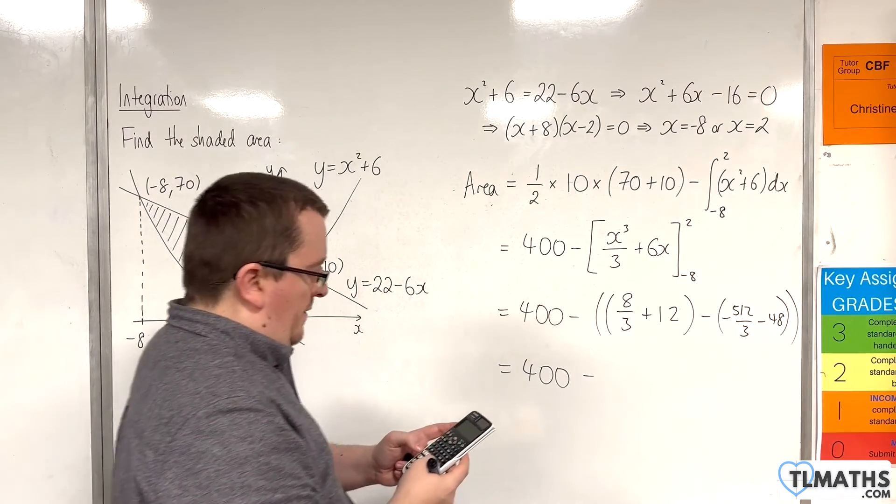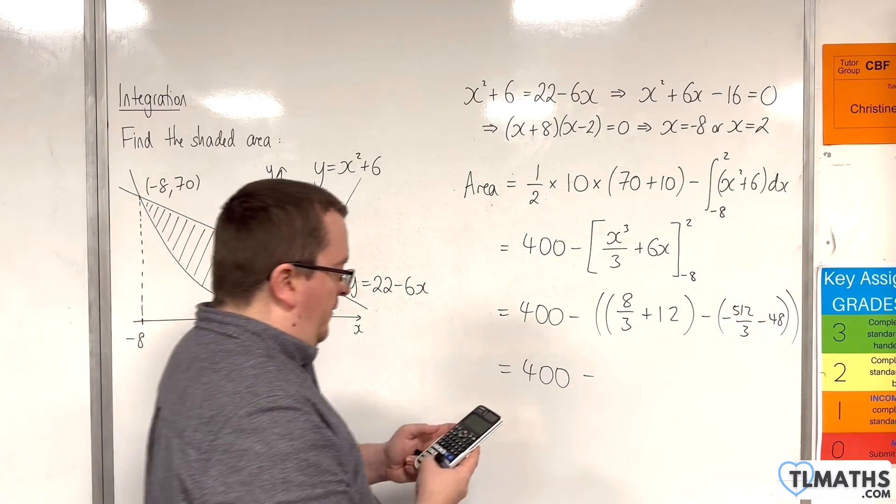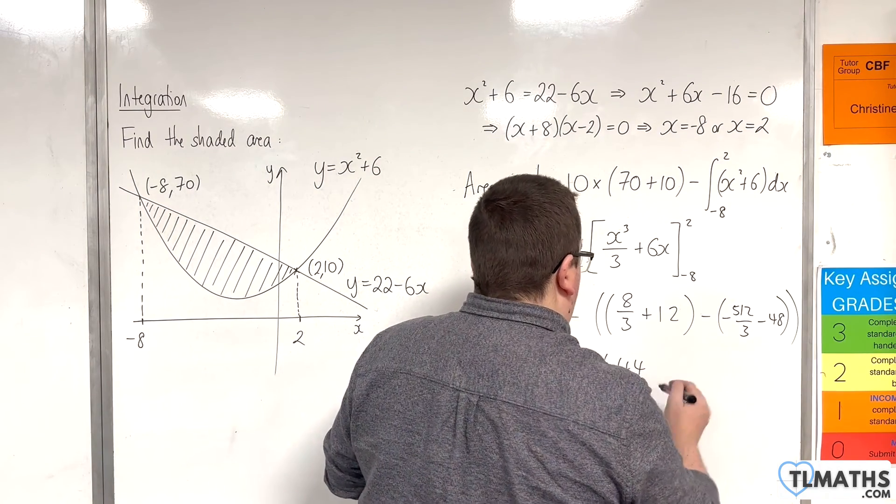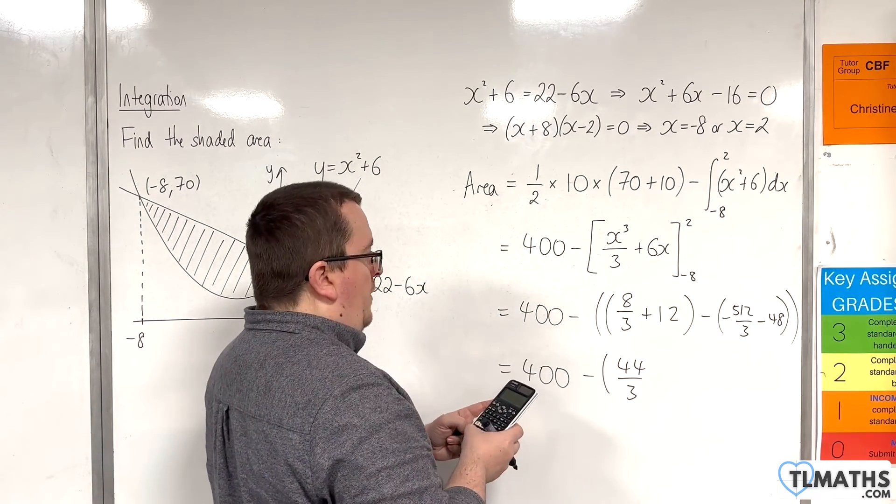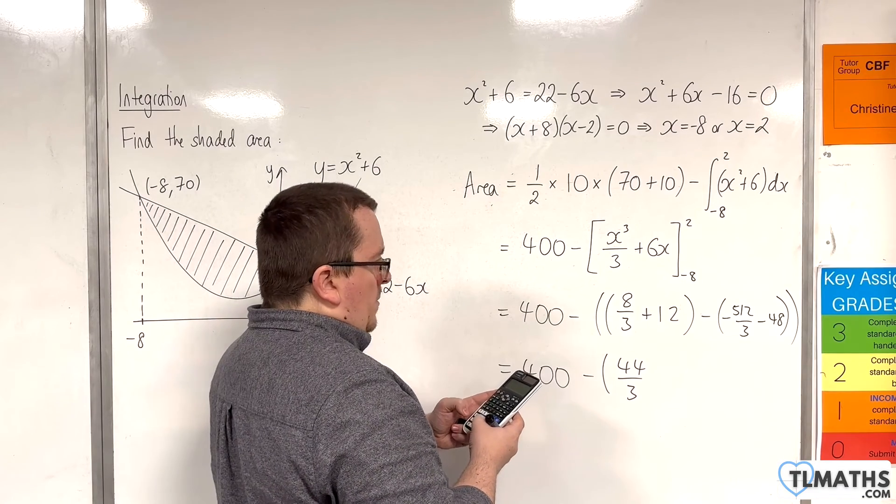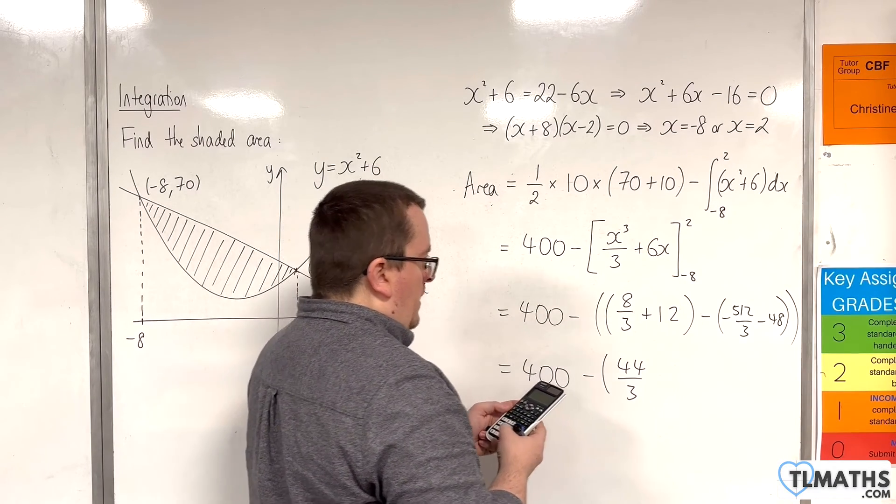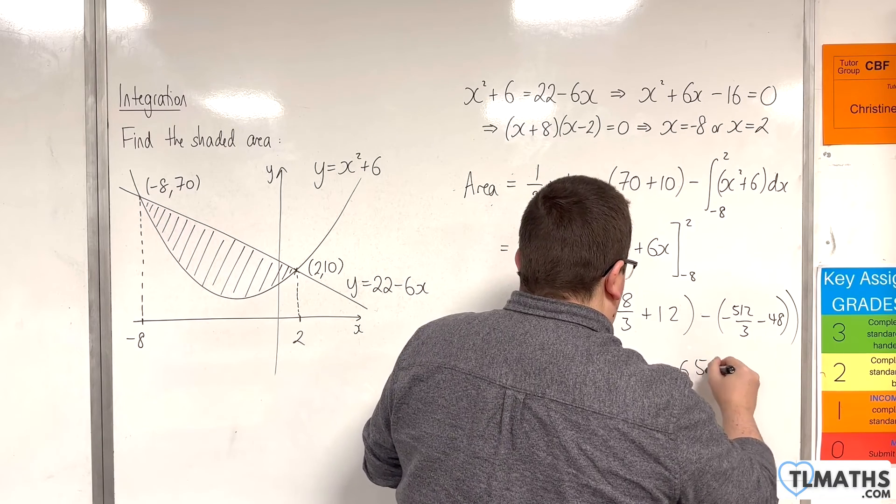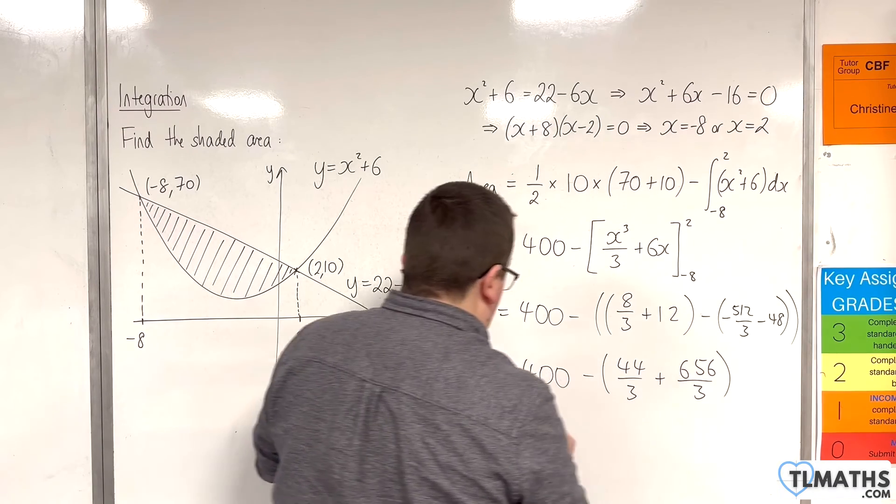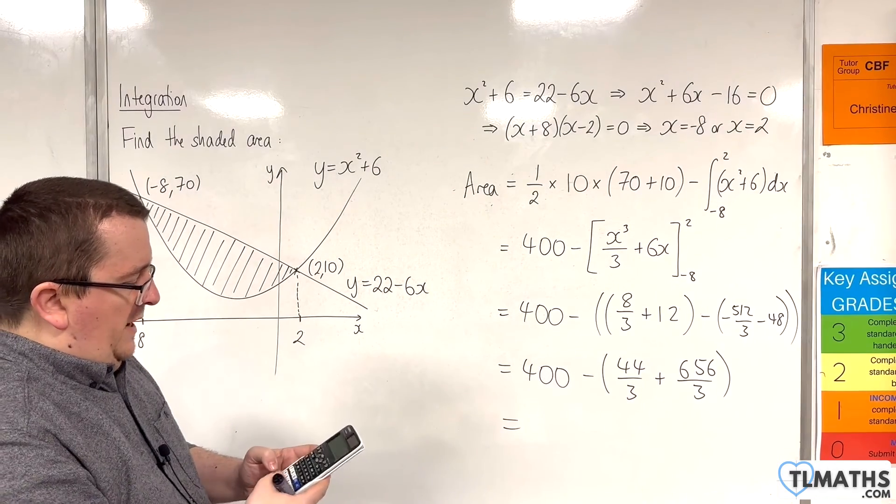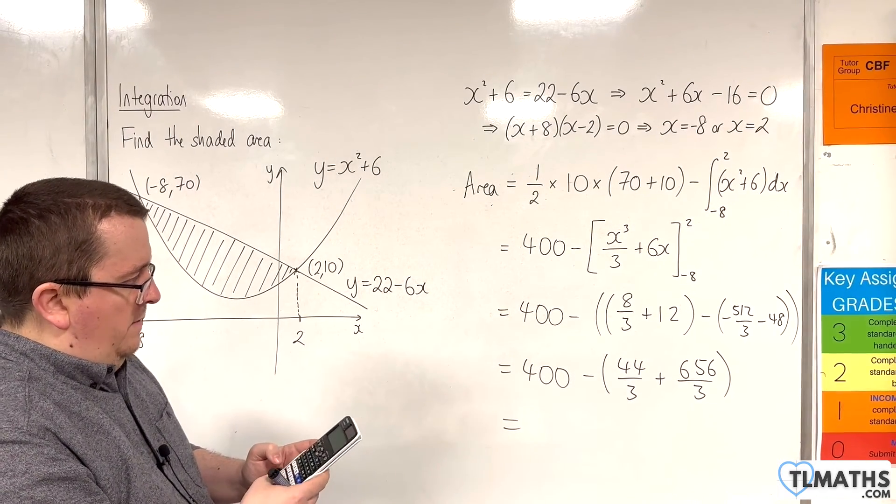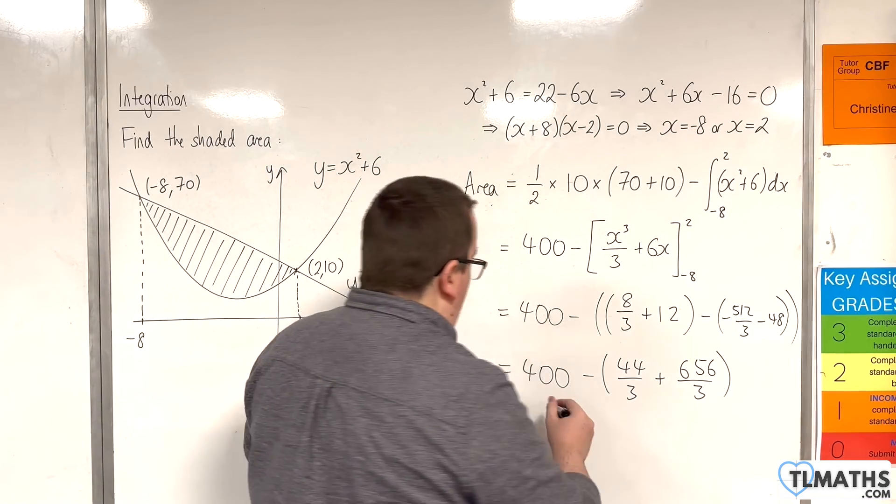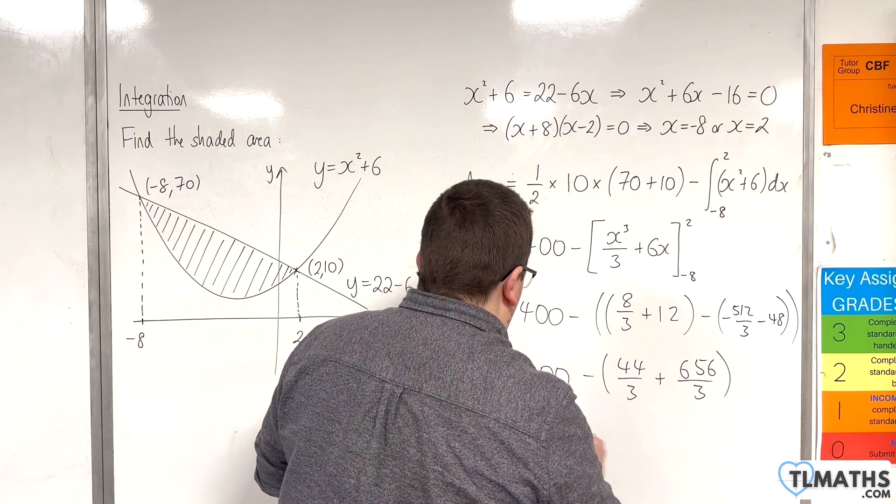Okay, so we have 8 thirds plus 12, so that's 44 thirds there, and then we've got minus 512 over 3, take away 48, and then the minus sign there, so plus 656 over 3. So, 400, take away 44 over 3, plus 656 over 3, and we get 500 over 3.